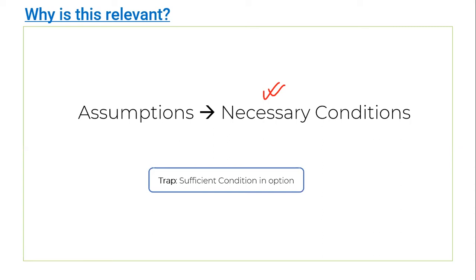Since all of our focus is just on making the conclusion come true, we kind of miss out on checking whether two close options differ on the basis of necessary versus sufficient. The key takeaway is: whenever you see two options that both seem to make the conclusion come true, really ask yourself — which one is the bare minimum, the necessary one? Which one goes beyond that as a sufficient condition?